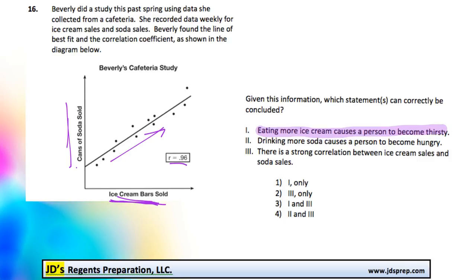But that doesn't necessarily mean that people eating ice cream causes them to become thirsty. They could be eating a sandwich that could be causing them to be thirsty. They could become thirsty because they haven't been drinking water. There's so many other reasons that cause someone to become thirsty. There's no way we can conclude that just based on this graph.